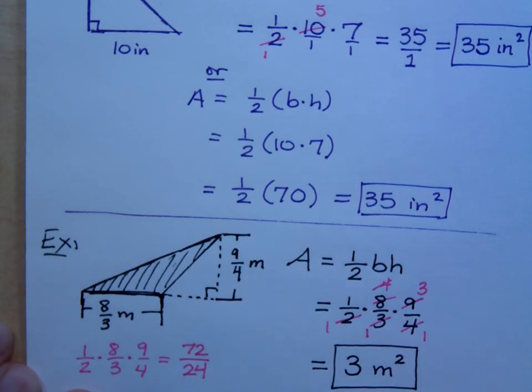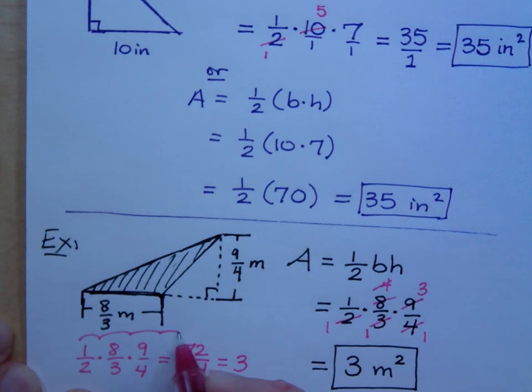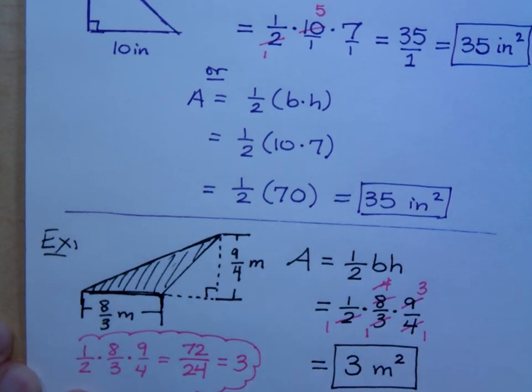And if you have 72 over 24, this might make a lot of you just freeze up. That's why I want you to reduce if you can before you multiply. But 72 divided by 24 does equal 3. So, you see even if you do it this way, you still get the same answer.